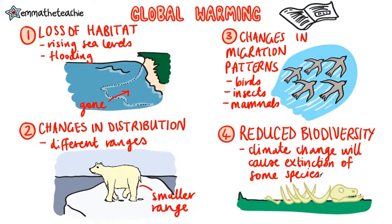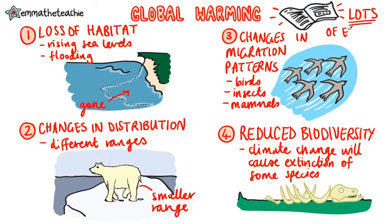There is one final thing to mention that is slightly hidden in the specification: there is scientific consensus — which means agreement — that global warming is happening and climate change will occur as a result. This is based on systematic reviews of thousands of peer-reviewed publications. In summary, there is a huge amount of evidence that global warming is happening.